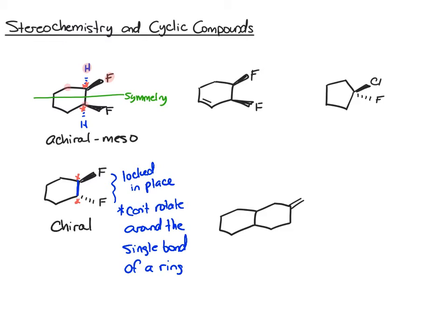This next example is very similar — we have a chiral center here and a chiral center here. You might at first glance be tempted to draw a symmetry plane, but what happens is this double bond desymmetrizes that side of the ring. For that reason you can't draw a plane of symmetry, and this is a chiral molecule.